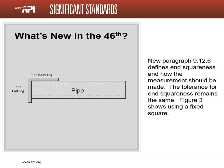Pipe end squareness is also not a new concept. Even though the acceptance tolerance remains the same, a new paragraph 9.12.6 and a revised figure 3 add a new definition and instructions.